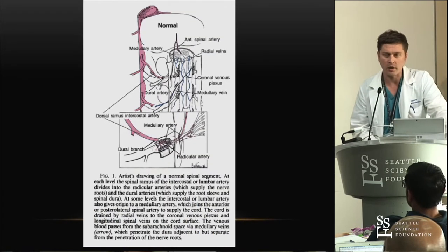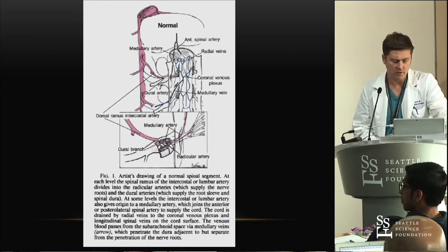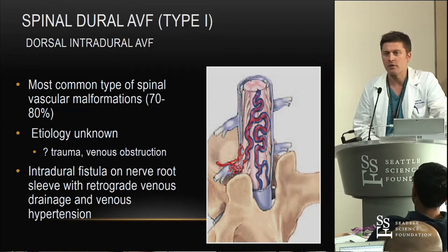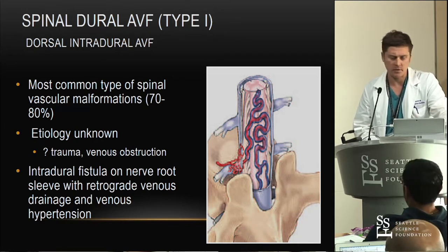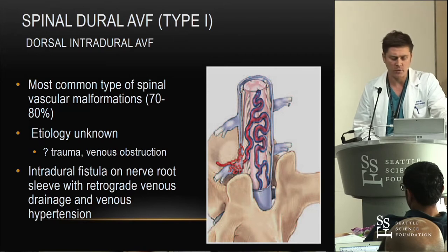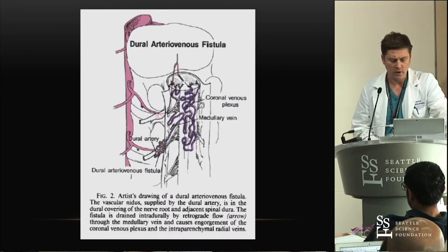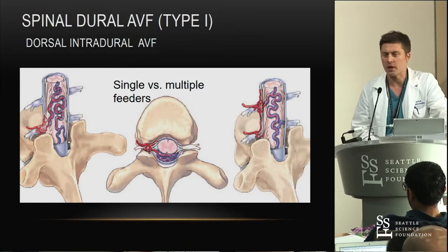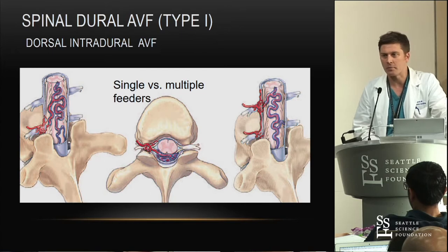This is a cartoon of normal anatomy that I'll use as reference. The type 1 dural AV fistulas — if you're going to remember one type of spinal AVM, this is it, because it's by far the most common: 70% to 80% of cases, often with a history of trauma that can be 10 or 20 years prior to presentation. The fistula is on the nerve root sleeve with retrograde venous drainage into the thecal sac, causing venous hypertension. It can be a single feeder or multiple feeders, which has implications for surgery — if you take one and miss the other, the patient may have apparent immediate cure but will have recurrence.